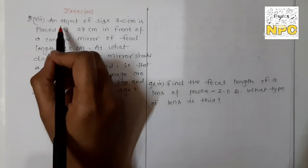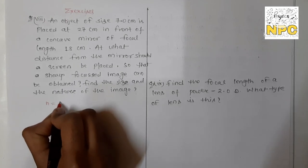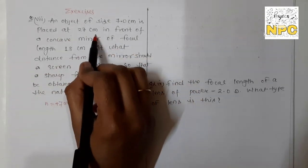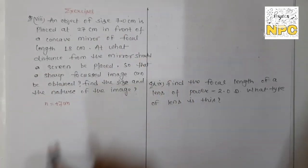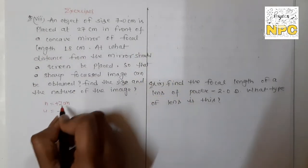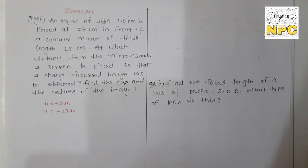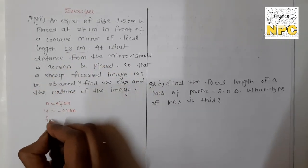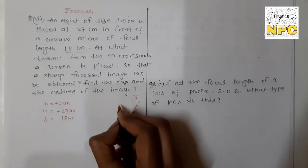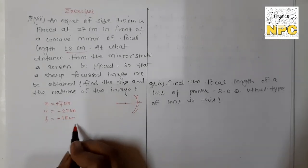Question number eight: an object of size 7 cm is placed at 27 cm in front of a concave mirror with focal length 18 cm. Given: H = +7 cm, U = -27 cm (object in front of concave mirror), F = -18 cm (concave mirror focal length is negative). We need to find at what distance from the mirror a screen should be placed to get a sharp focused image, meaning we need to find the image distance V.